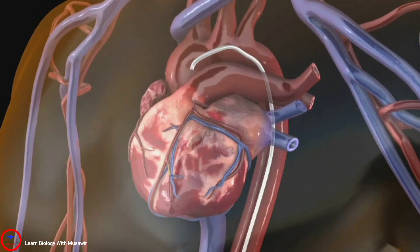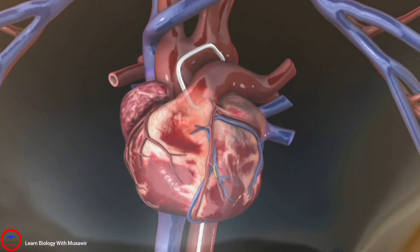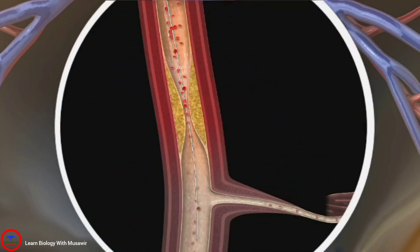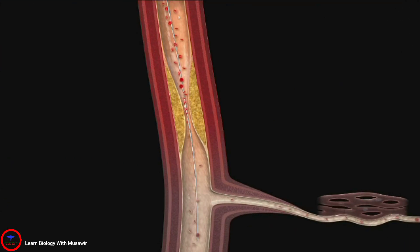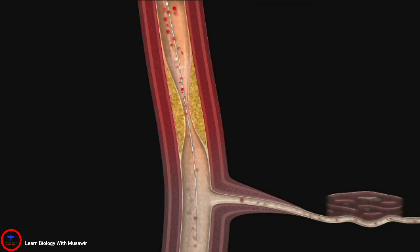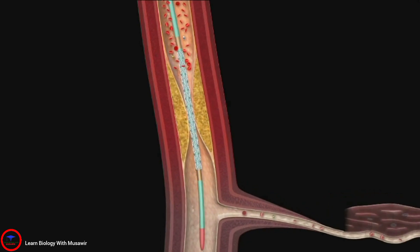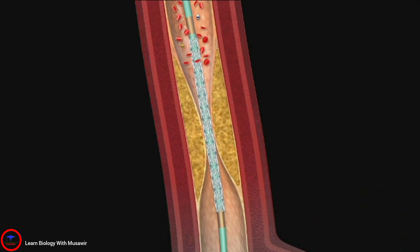When the catheter reaches the affected coronary artery, a thin, flexible metal wire is advanced down the coronary artery, past the narrowed area. A second, smaller catheter is then threaded over the wire to the narrowed area. On the end of this catheter is a mesh-like metal device known as a stent, with a deflated balloon inside.